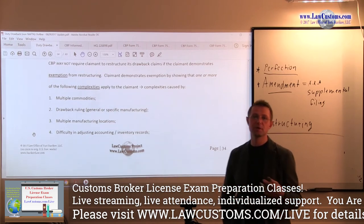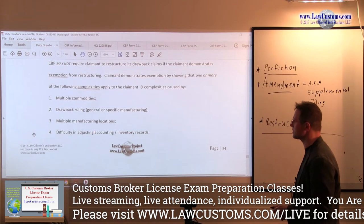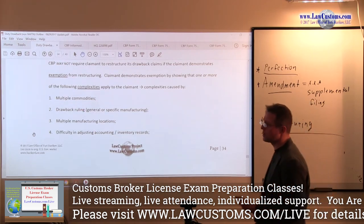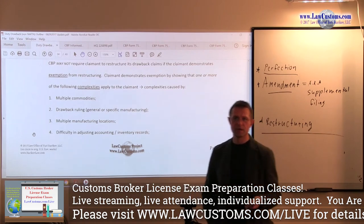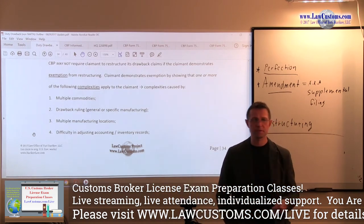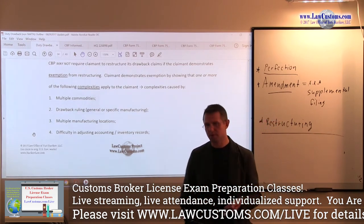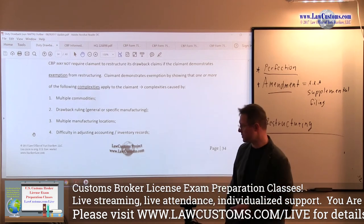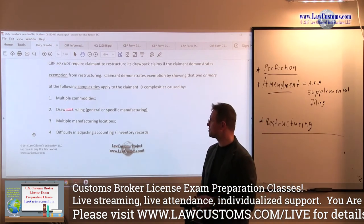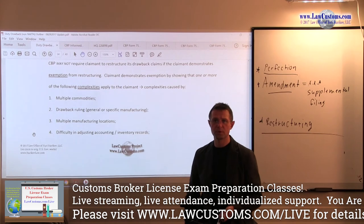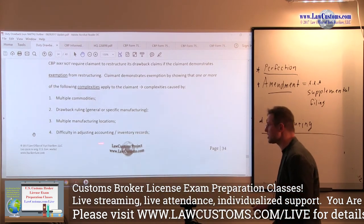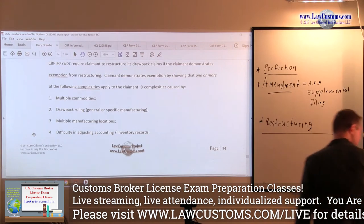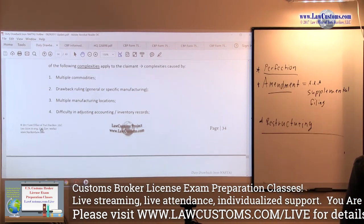So that would be one example. Drawback ruling: you file a ruling with customs and customs says, this is how you, this is the treatment you must afford to this particular type of commodity. Multiple manufacturing locations, so we're talking about the geography factor.